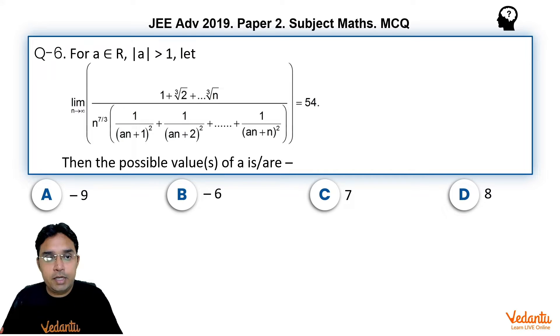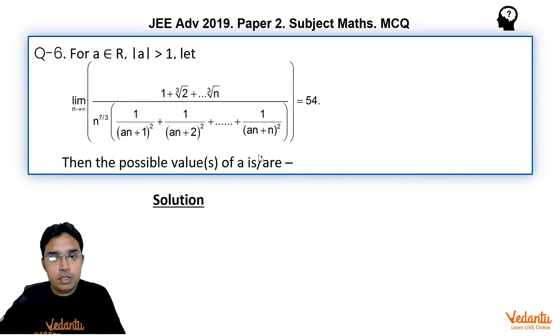Let us see what this question is. For a belongs to R, mod a greater than 1, let limit n approaches to infinity. Then there is a series in numerator upon n raised to the power 7/3 into a series in denominator also equal to 54. Then possible values of a is R. Options are minus 9, minus 6, 7 or 8. Let us see how to solve this question.